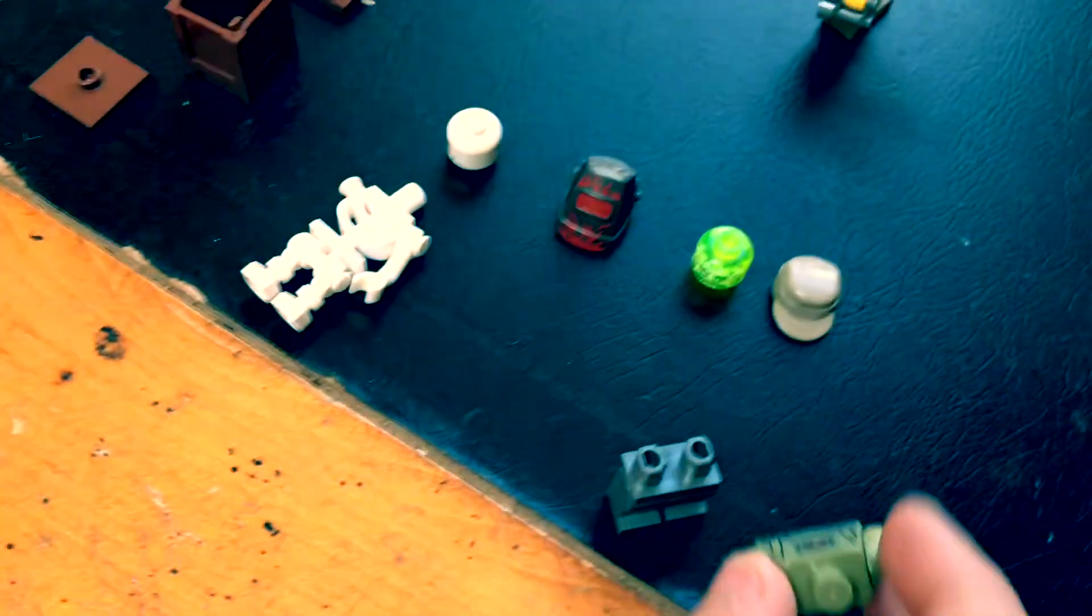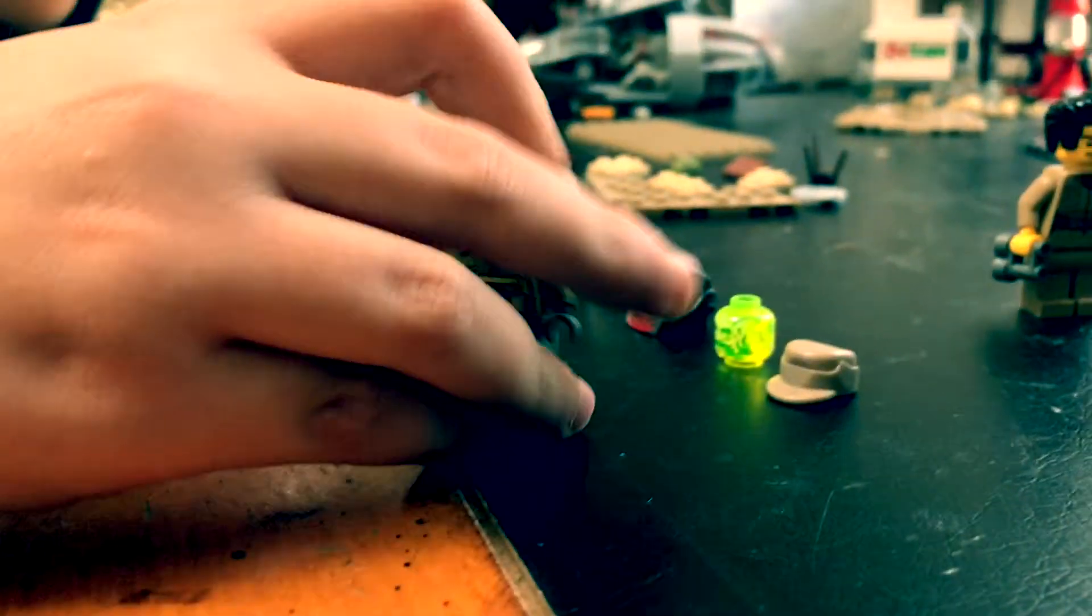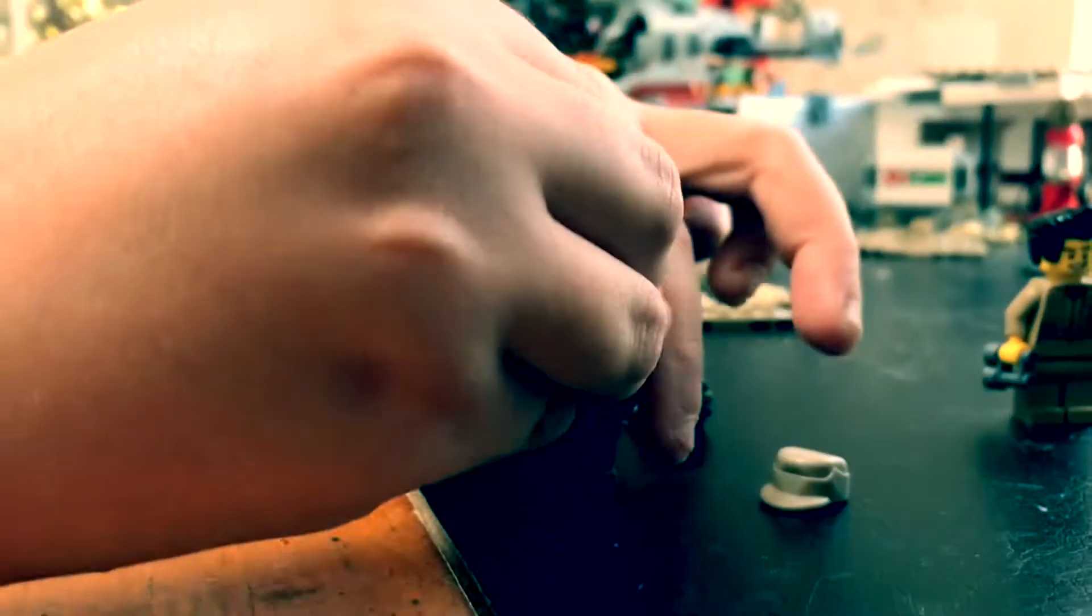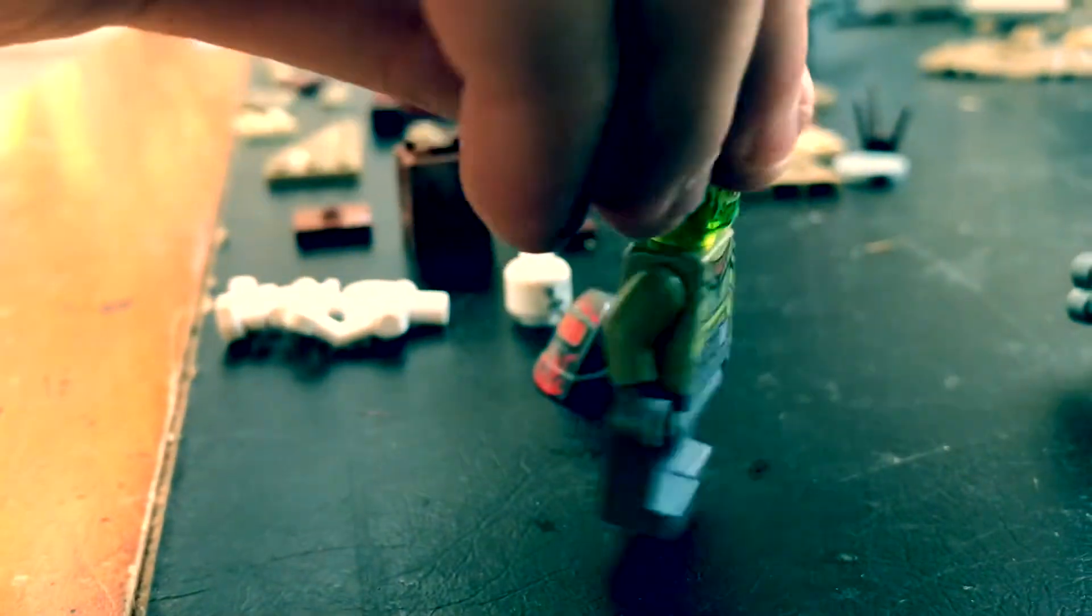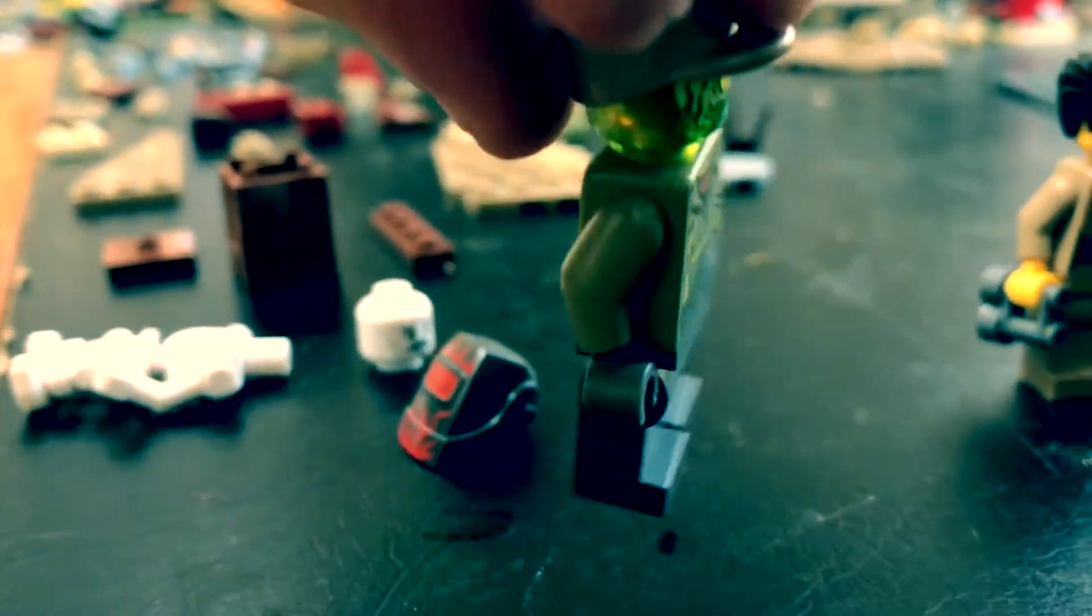Alright, next up we'll build the zombie. Nice. First our zombie has some, yeah a green shirt and a green head. He is a zombie of course. Look at that. Oh, and then he has a zombie head. Awesome.